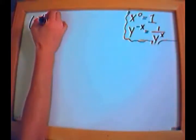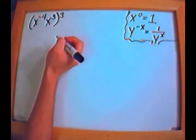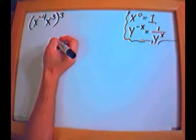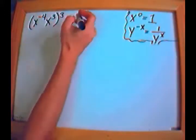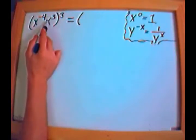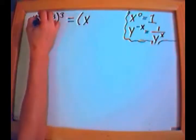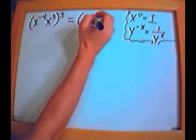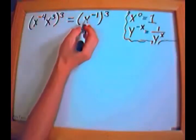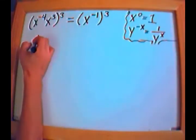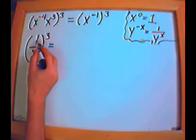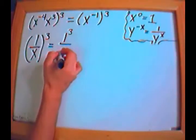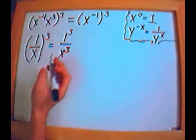Next problem: (x to the negative 4 times x to the third), all raised to the third power. First, simplify inside: negative 4 plus 3 is negative 1, giving x to the negative 1 raised to the third power. x to the negative 1 is 1 over x, and raising a fraction to a power applies it to top and bottom separately.